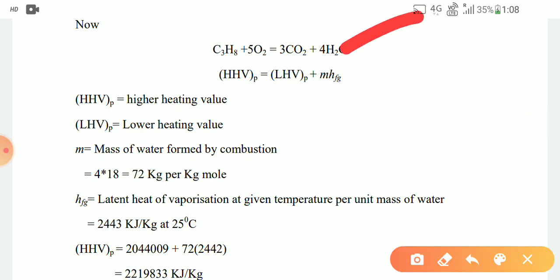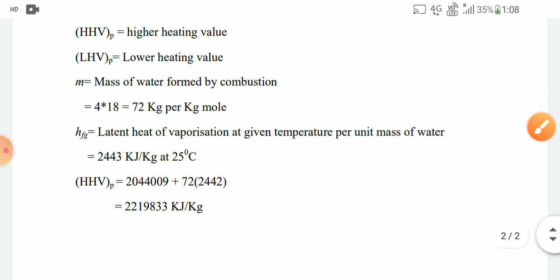And mass of water vapor is 4 into 18, that is 4 mole of water, so 72. Now put this value in the main equation.